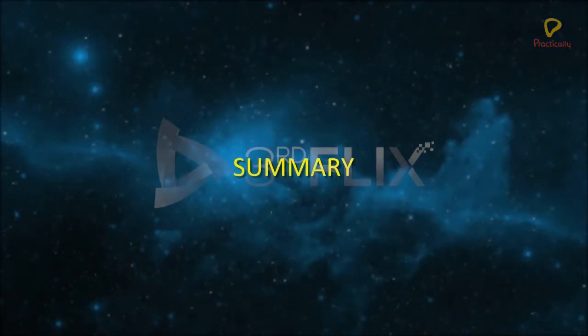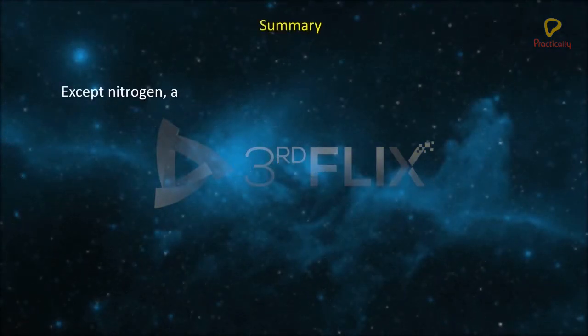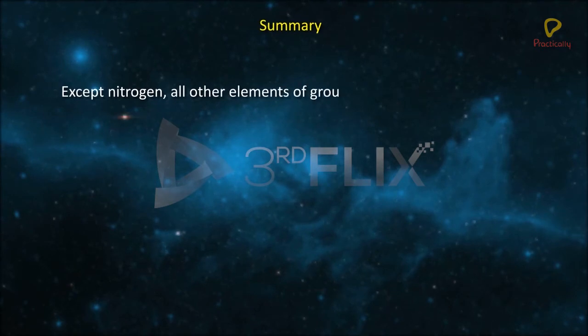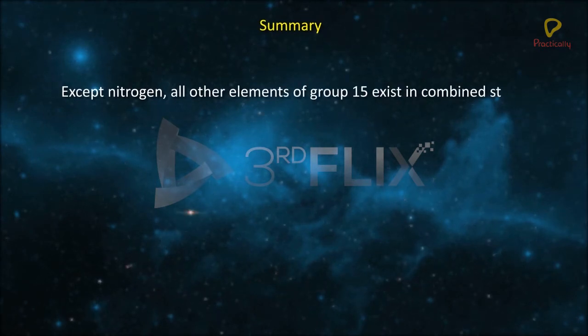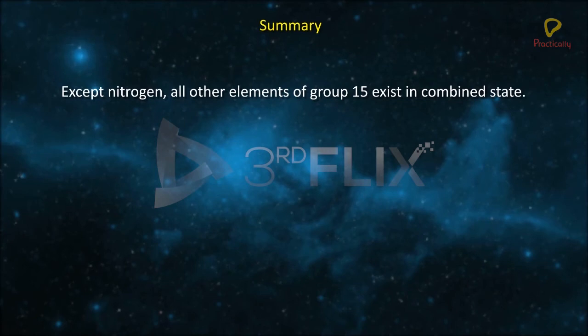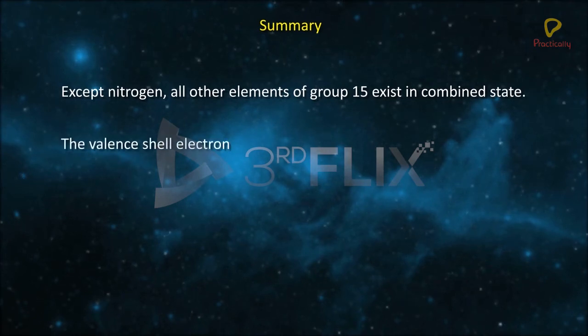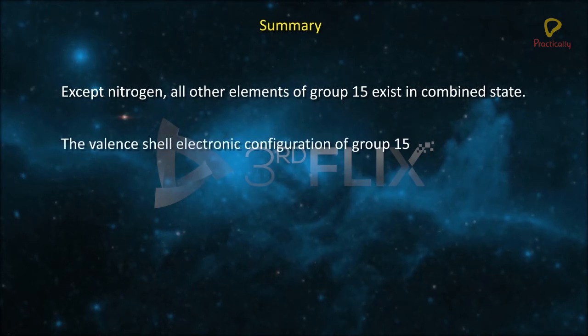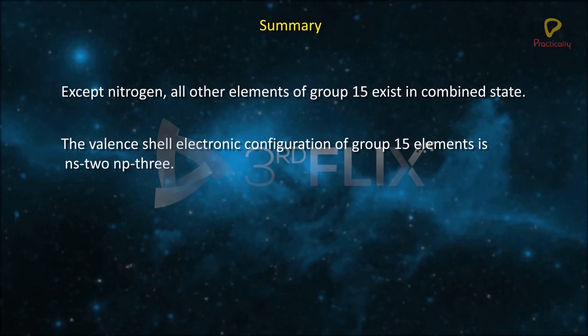Let's summarize. Except nitrogen, all other elements of Group 15 exist in combined state. The valence shell electronic configuration of Group 15 elements is ns2 np3.